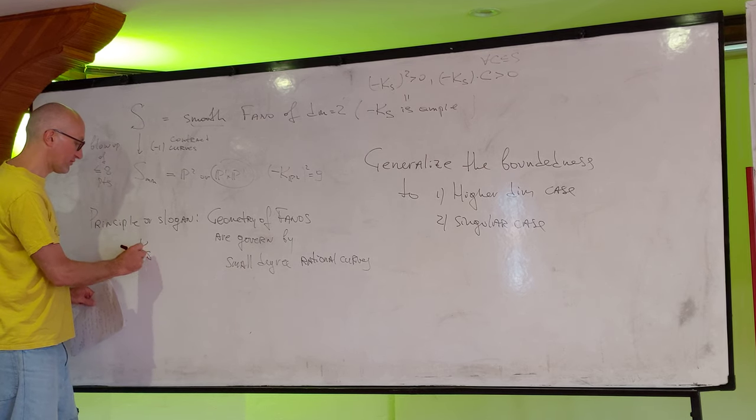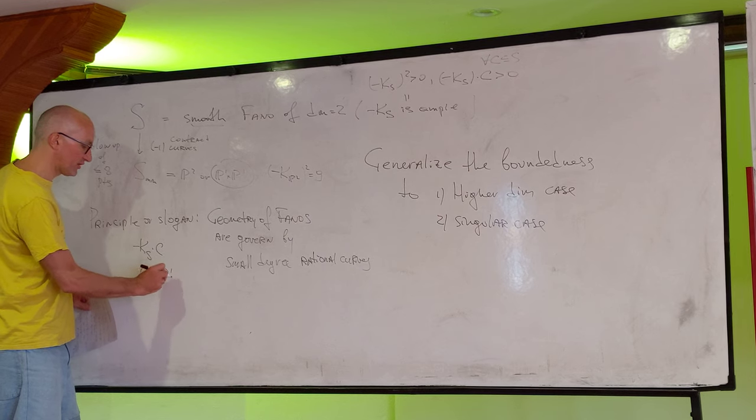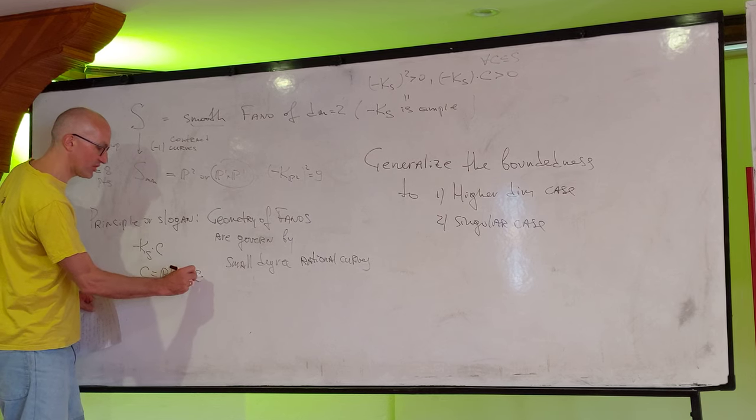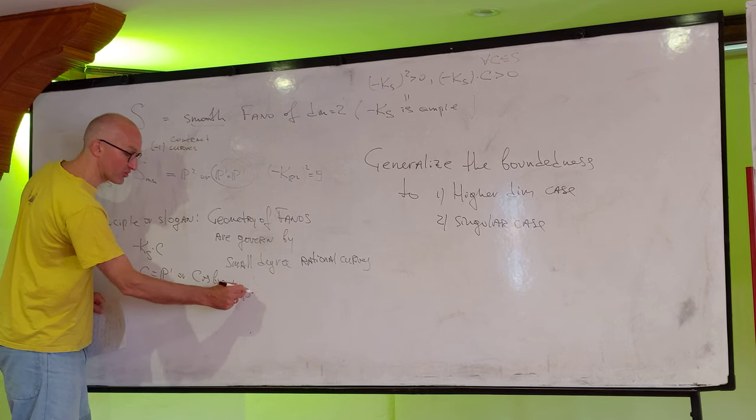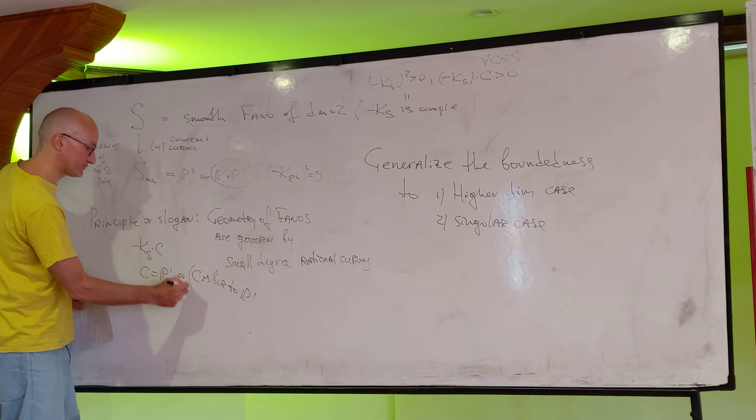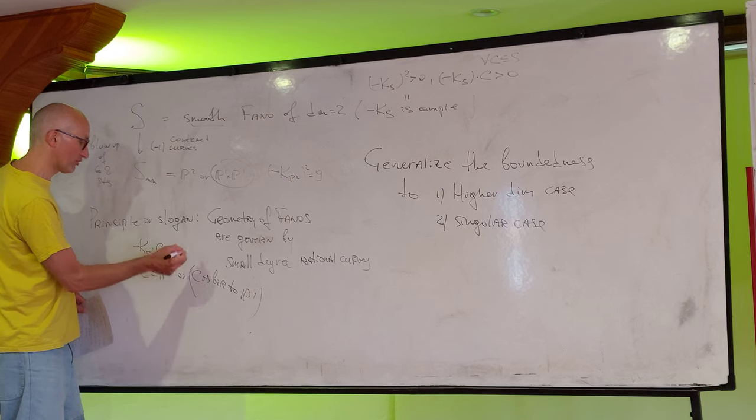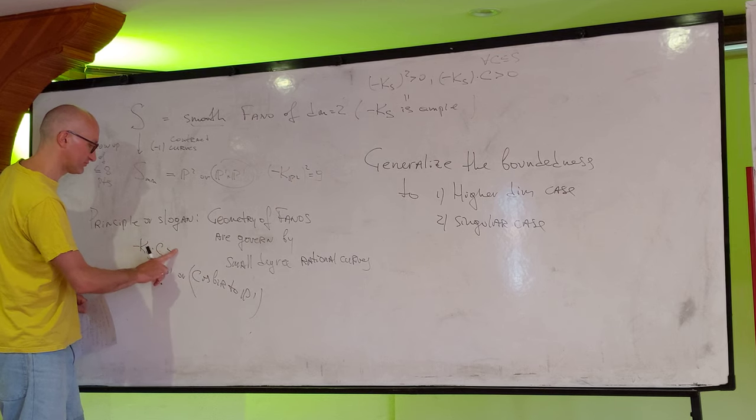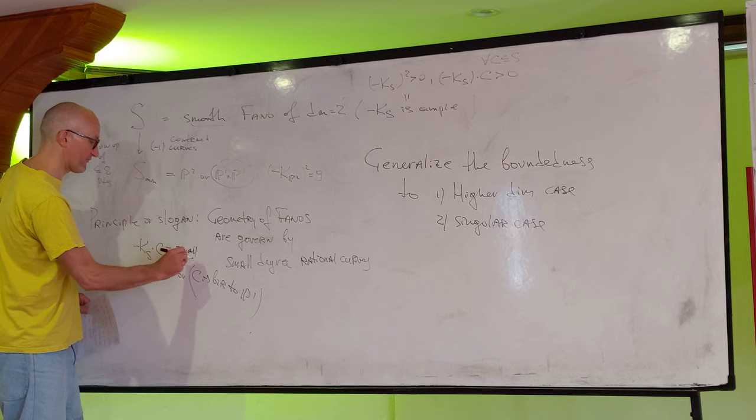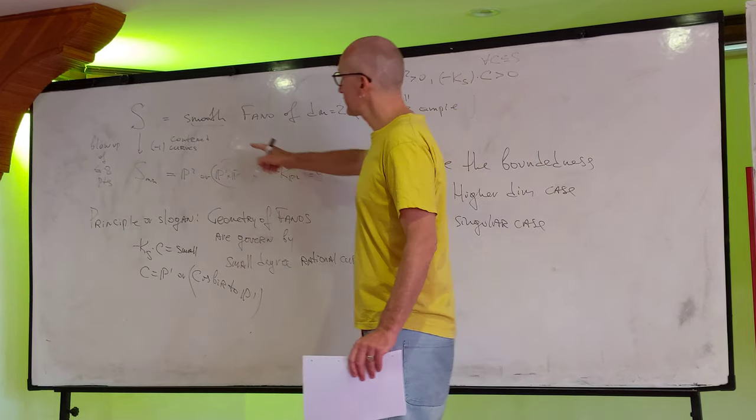By rational curve, it means it's P1. Or maybe c is birational to P1 if it's singular. If the curve is singular. And this means this is small. Small. This is degree.